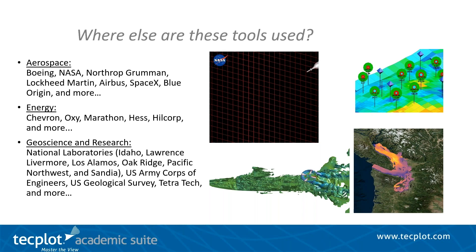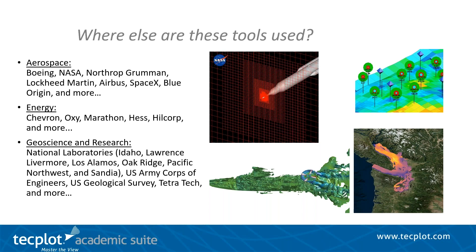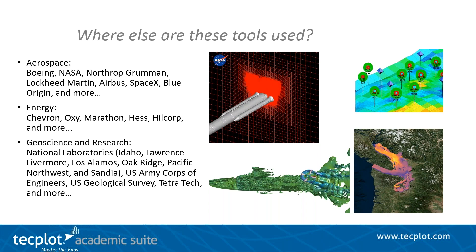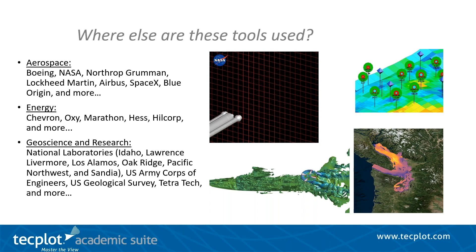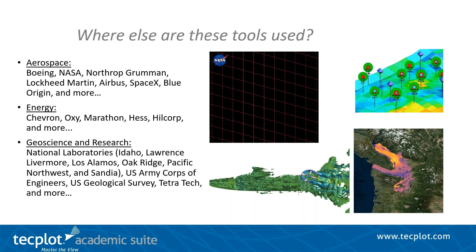Where else is TechPlot software being used? Our tools are being used at hundreds of universities, but also outside of academia. TechPlot has close to 50,000 customers worldwide at aerospace organizations like Boeing, NASA, Northrop Grumman, Lockheed Martin, Airbus, SpaceX, and Blue Origin. Energy companies like Chevron, Oxy, Marathon, Hess, and Hillcorp are using TechPlot RS. In geoscience, industries and research laboratories such as Idaho, Lawrence Livermore, Los Alamos, Oak Ridge, Pacific Northwest, and Sandia National Laboratories use our tools, as do the US Army Corps of Engineers, US Geological Survey, and Tetra Tech. If you are a student interested in working at any of these companies, using the TechPlot Academic Suite now will give you an advantage in being brought onto teams that are already using our software.